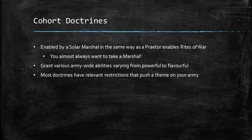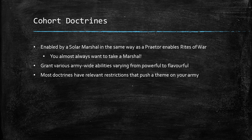Next we're going to talk about cohort doctrines, and there are quite a few of these. They're your equivalent to Space Marine legion rules — they give you some special rules and are enabled by taking a Solar Marshal in your army, the same way a Praetor enables a right to war. You're almost always going to take the Marshal since all of these rules are good. Some are powerful, some are more flavorful, and most have relevant restrictions that push a theme onto your army, often restricting vehicles or infantry.